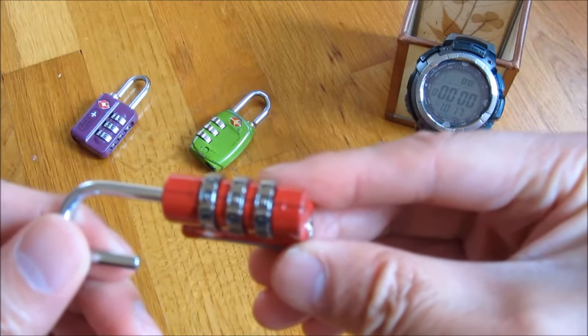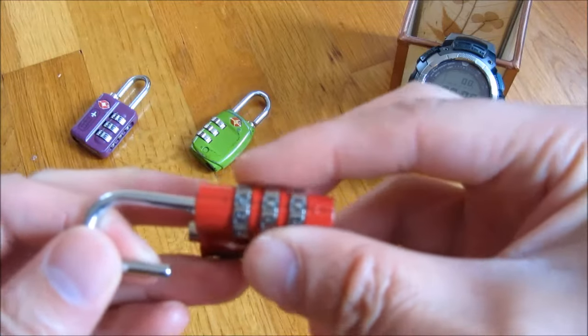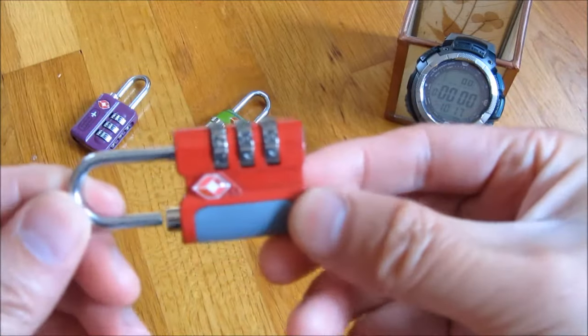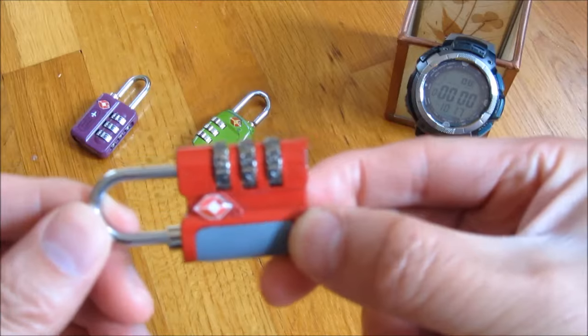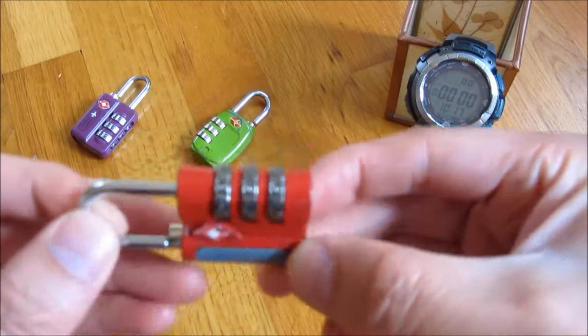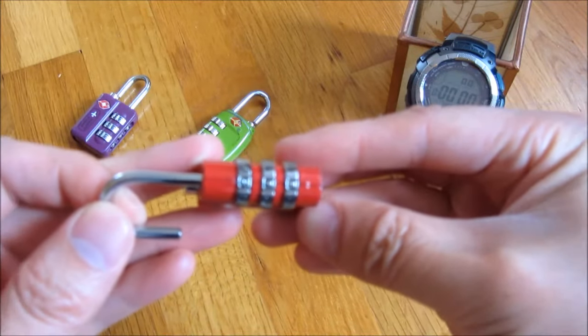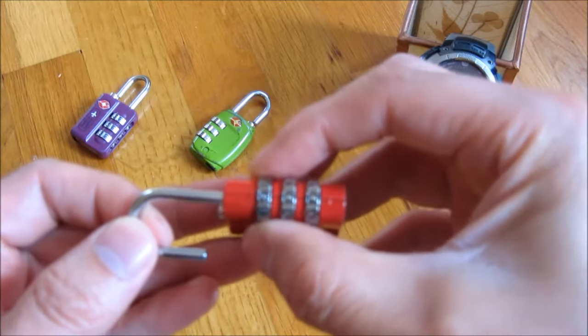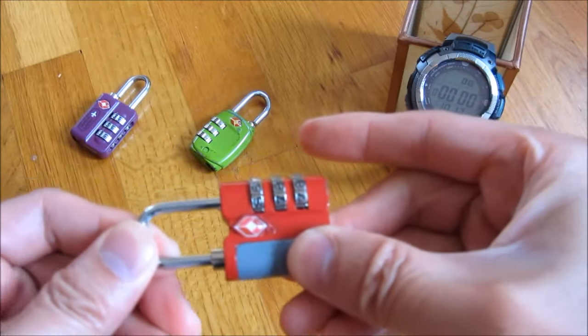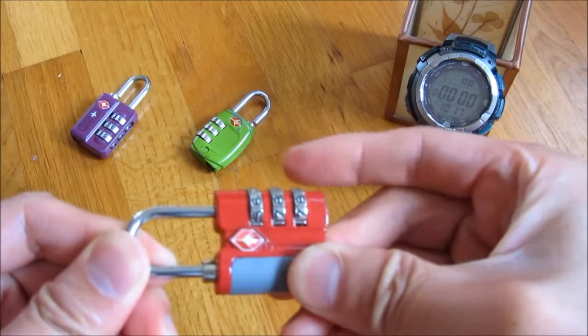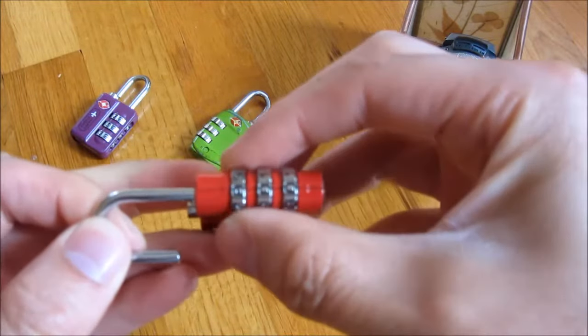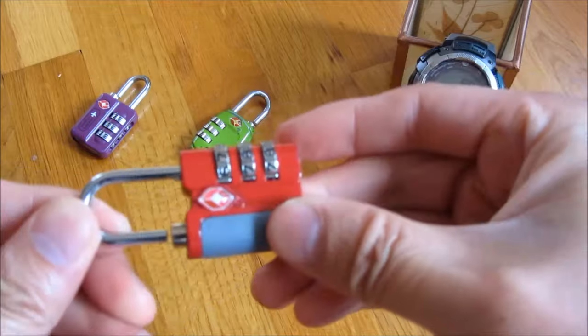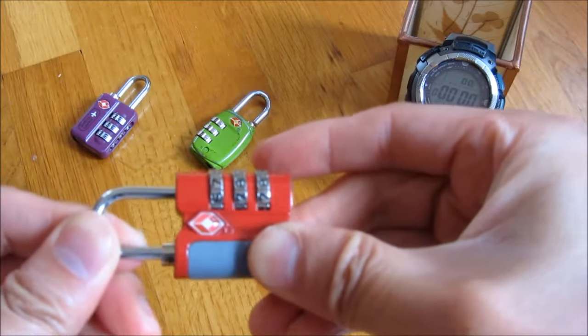So you'll notice here that the way to do this is when you have the right combination, these locks actually close. Without the right combination, the locks will not even close. For example, the correct combination for this lock is 900, 9-0-0, and if I set it to 800, you'll see if I push it in, I can't lock it. But with a correct combination, it just goes in like that.